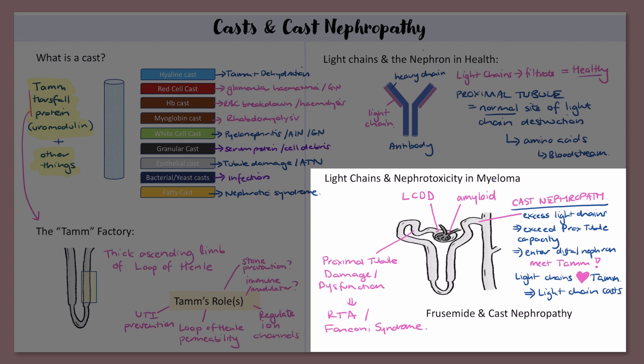Very often these patients are extremely close to dialysis or on dialysis very quickly — it's very destructive. Formation of these light chain casts can be enhanced by high concentrations of electrolytes in the urine. Having a high concentration of sodium chloride or calcium in the urine can enhance the precipitation of Tam and also enhance cast formation. Acidic urine can do the same thing.